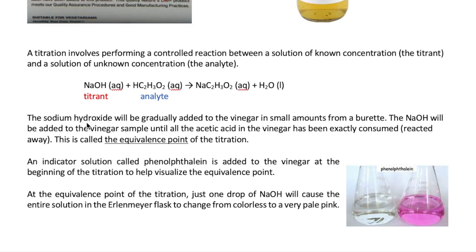We're going to slowly add our sodium hydroxide into the vinegar solution using an instrument called a burette. The burette is an analytical instrument, which means we can precisely measure the amount of sodium hydroxide being added. The goal is to add NaOH until all the acetic acid in the vinegar has been exactly consumed — the amount stoichiometrically equal to the quantity of acetic acid in the sample. When you've added exactly that quantity, that's called the equivalence point of the titration.